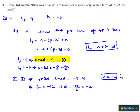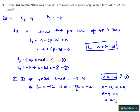Substituting d = minus 2 into equation 1: a plus 2 into minus 2 equals 4, which gives a minus 4 equals 4, therefore a equals 8.